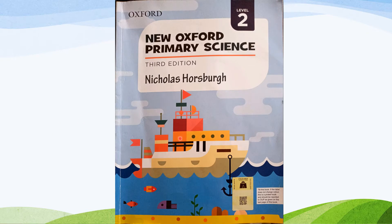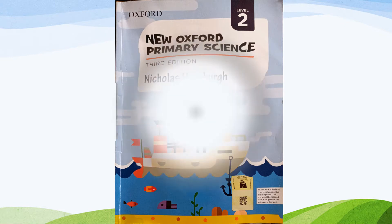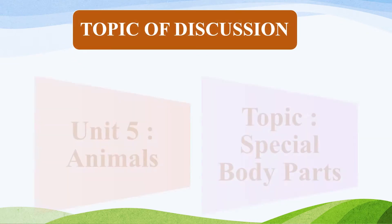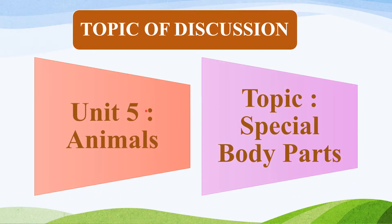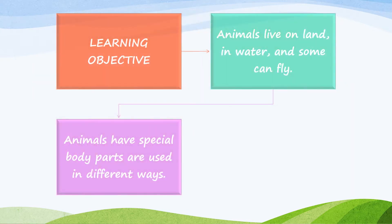This is your science book, and we are starting a new chapter. Today's topic is Chapter: Animals, Unit 5. In this unit, we will start the topic 'Special Body Parts.' At the end of this lesson, you will be able to learn that animals live on land, in water, and some can fly. You will also learn that animals have special body parts that are used in different ways.